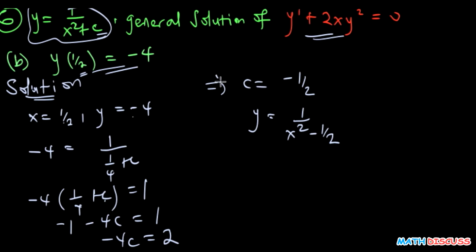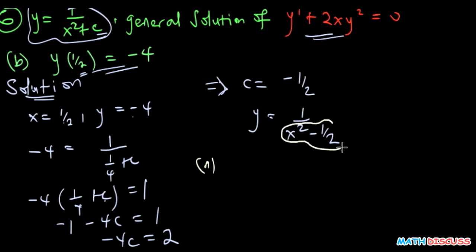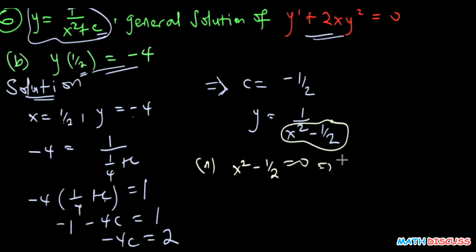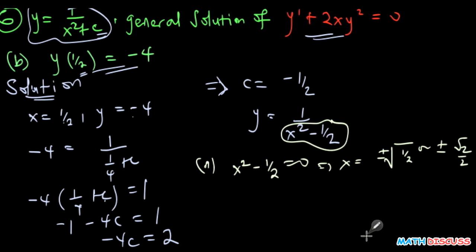We're also told to find the interval of definition here. It consists of all values excluding those that make the denominator zero. Setting the denominator to zero, we find x equals plus or minus the square root of one half, which can be rationalized to plus or minus root 2 over 2. All values excluding these are in the domain.